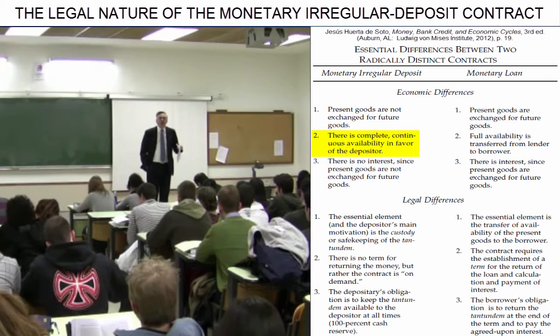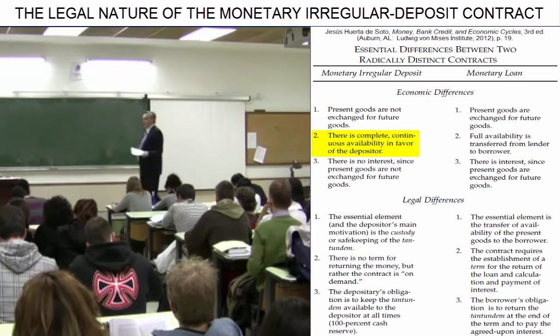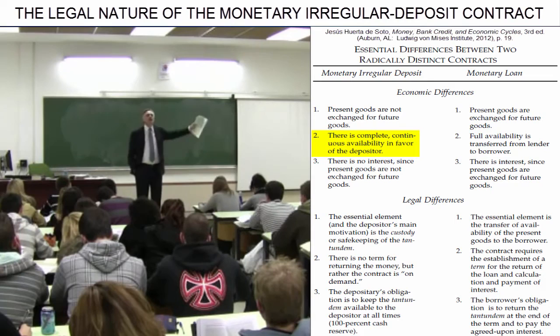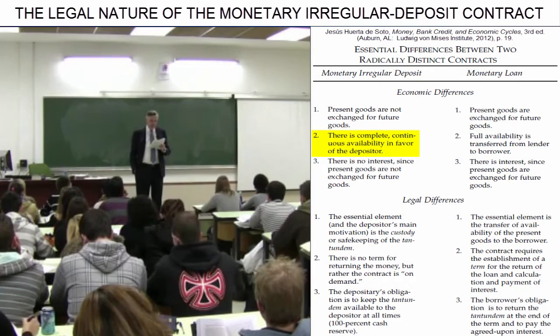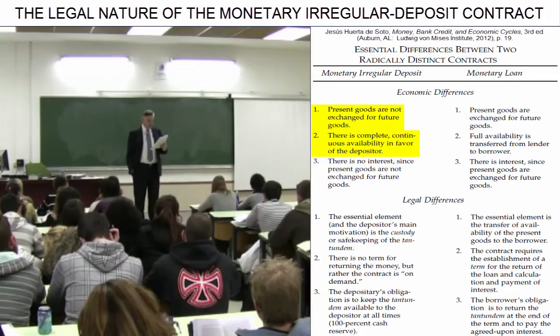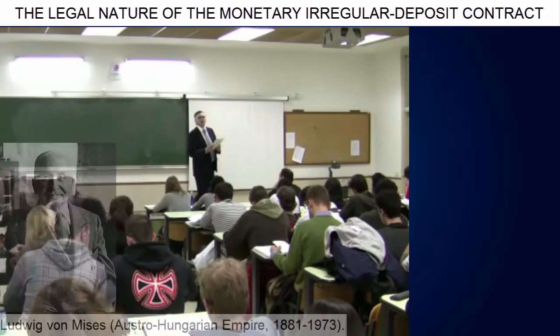Practically speaking, the depositor says: what are my cash balances? In my wallet, so many euros; at home in the sock and in the safe, so many; and in the demand deposit at the bank, so many. The money is mine — it is part of my cash balance. I do not want to lend it to anyone. There is no credit transaction. In the deposit, availability is not given up at all, but in the loan it is. Listen to what Mises very clearly states in The Theory of Money and Credit.